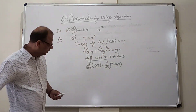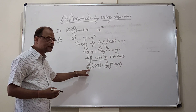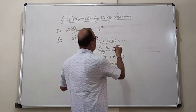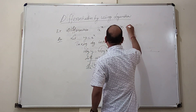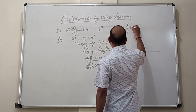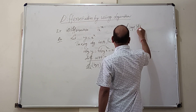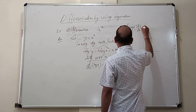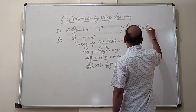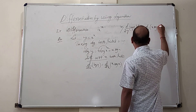This implies we write: d/dy of log y times dy/dx is equal to d/dx of x·log x. The left side uses the chain rule since y is a function of x.